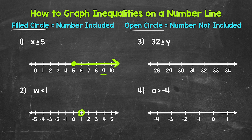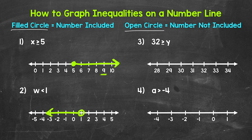So let's put an open circle at 1. And now we need an arrow. We know that w is less than 1, so we need an arrow pointing to the left — the direction of all of the numbers less than 1. And now we have our inequality, w is less than 1, graphed on the number line. The open circle shows that 1 is not included, and then the arrow represents all of the numbers less than 1. So these are our solutions.